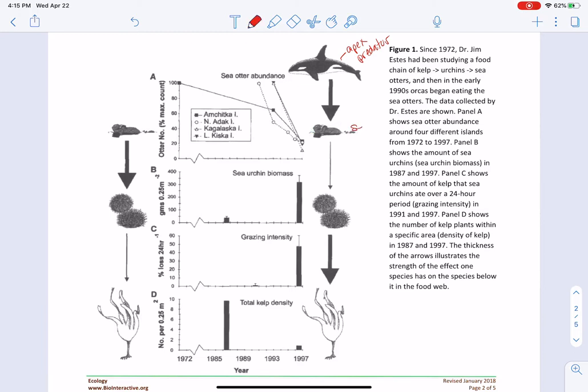Maybe I should label those. And that sea otters then consume urchins. Urchins eat kelp, which is the lowest trophic level here. These are the producers.